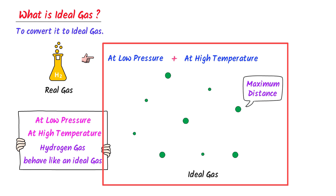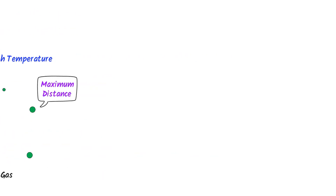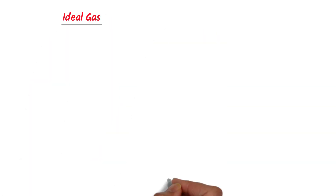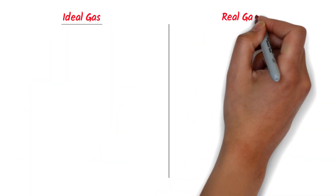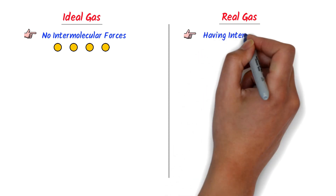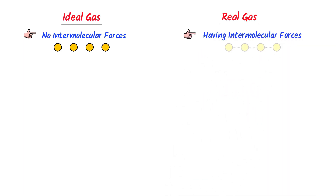This is the whole concept of ideal gas. Now, what is the difference between ideal gas and real gas? Well, in ideal gas, no intermolecular forces of attraction exist between molecules. While in real gas, intermolecular forces of attraction exist between molecules.